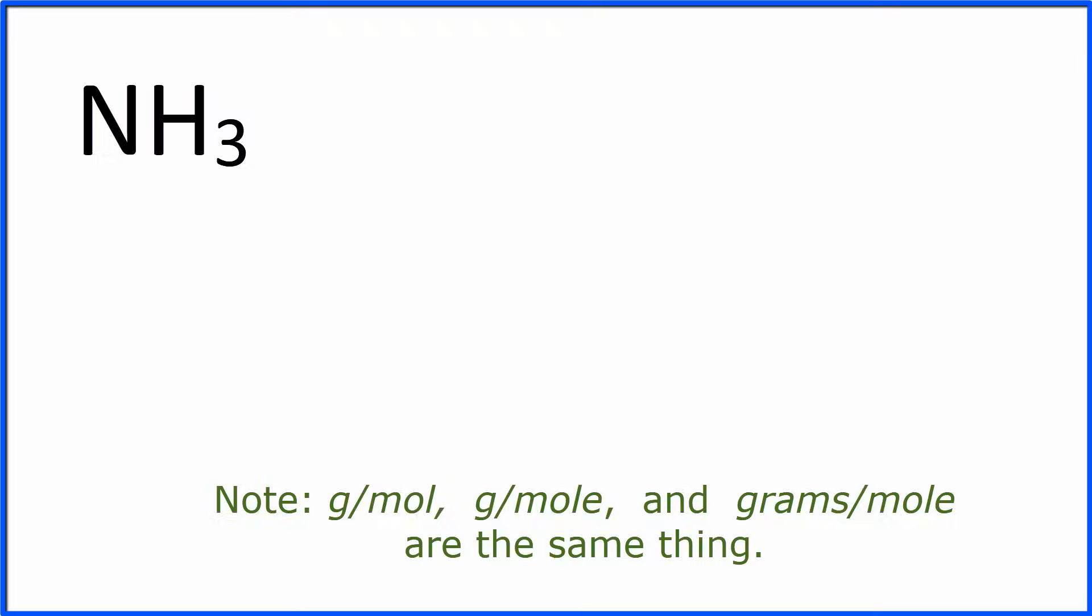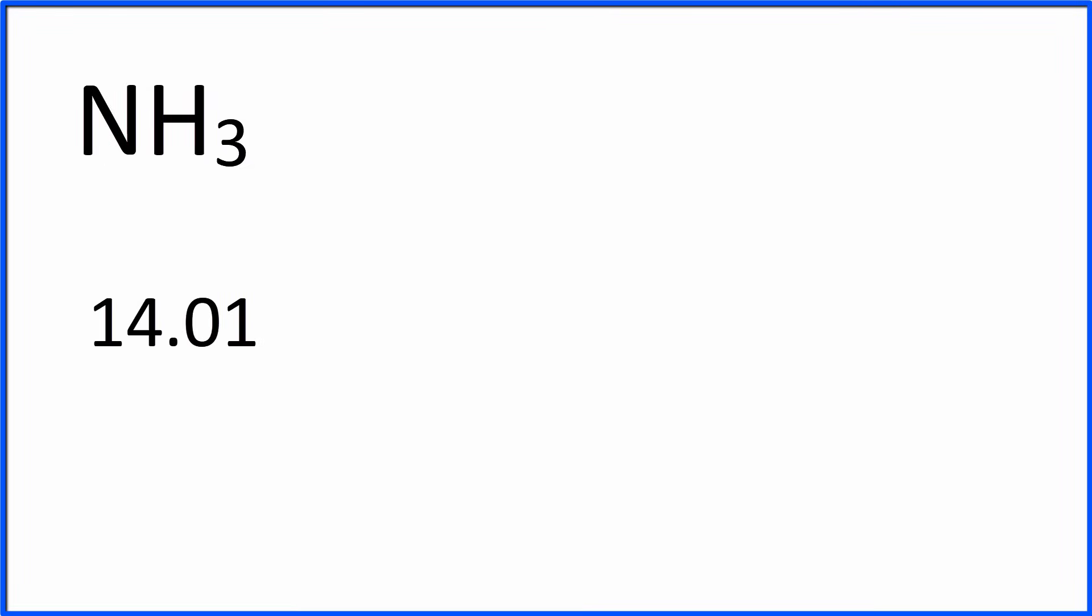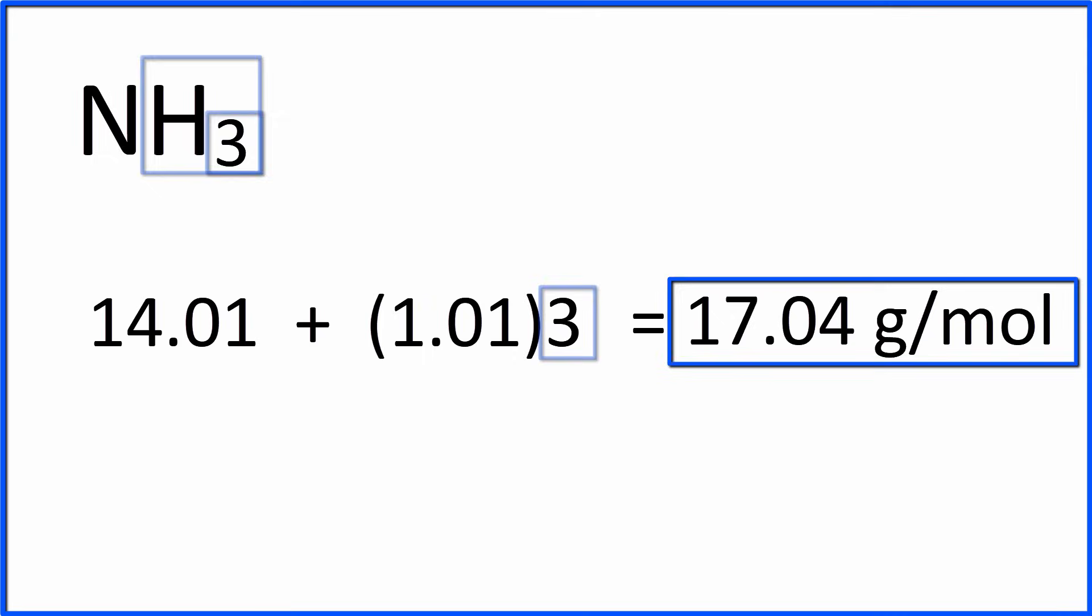Let's try another, NH3. So first, we look up the atomic masses on the periodic table. We have 14.01 for nitrogen and 1.01 for hydrogen. And then we're going to multiply that hydrogen by three, because there is a subscript of three after the H. Once we do that, we add everything up, and we have the molar mass for NH3.